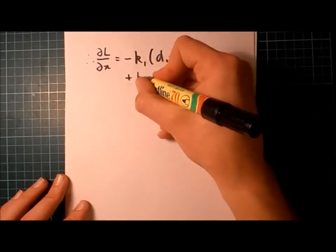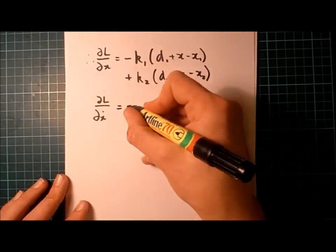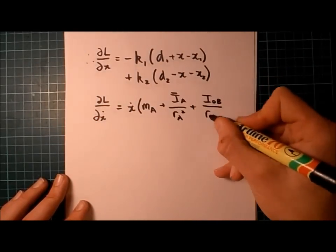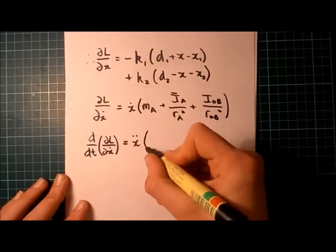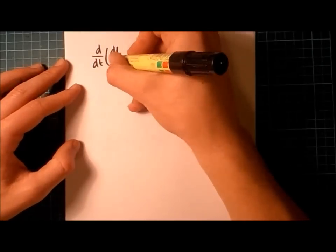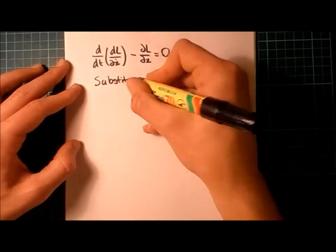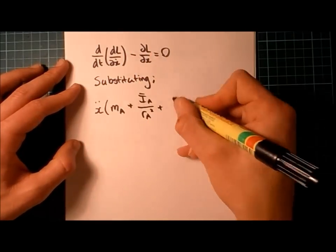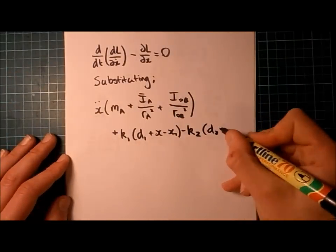So, to substitute into Lagrange's equation, we need to take the partial derivative with respect to x, and also with respect to x dot. Performing those operations, here's what we get. So now, we can substitute those equations back into our Lagrange's equation.